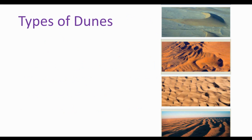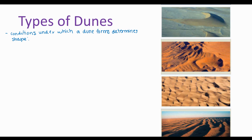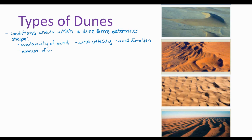There are different types of dunes, and they form due to different conditions. The conditions under which a dune forms determines its shape. These conditions are the availability of sand, the wind velocity, wind direction, and the amount of vegetation present. Obviously, where we have plant roots holding the soil in place, we're going to see less wind erosion.